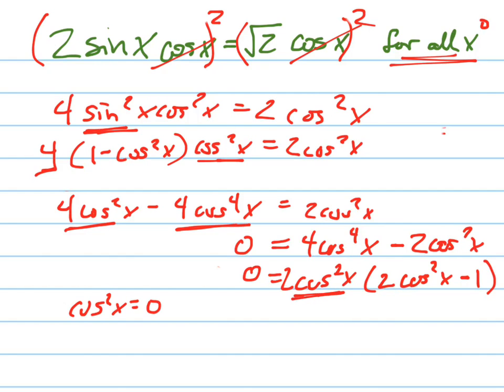That means cosine squared x equals zero, which again gives me the solution is 90 plus or minus 180 degrees.